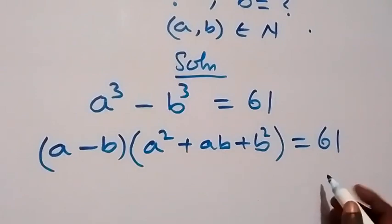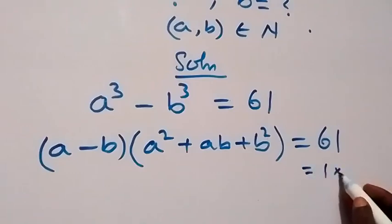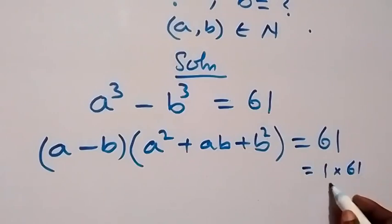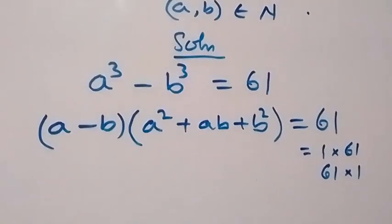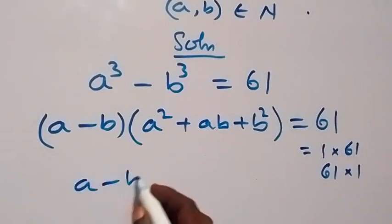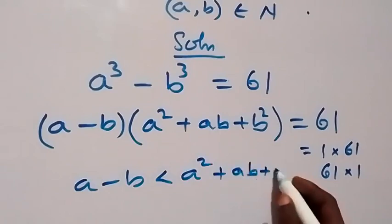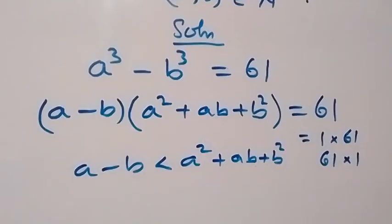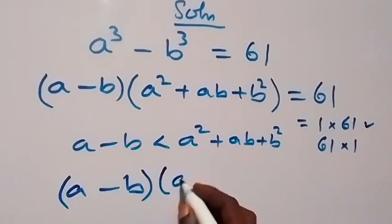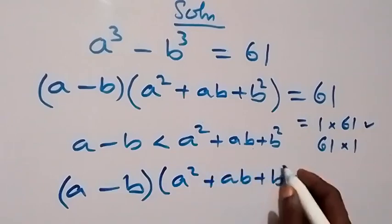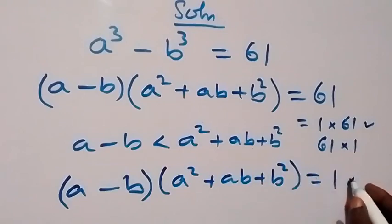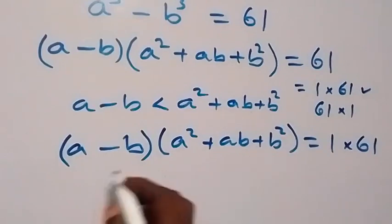Now 61 we can write as 1 times 61, or 61 times 1. We should note that a minus b will be less than the other bracket, which is a squared plus ab plus b squared. So from here we work with a minus b multiplied by a squared plus ab plus b squared equals 1 times 61.